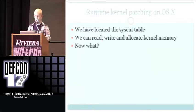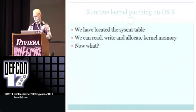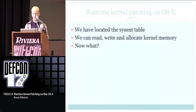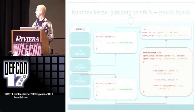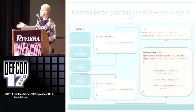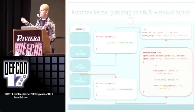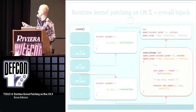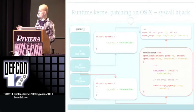Now we have located the sysentry table which holds all the system calls in the OS. We can read, write, and allocate kernel memory. So, here's the dirty business: the sysentry table contains all the system calls. Normally the open syscall points to its handler at a given address. What we do is modify that structure to point it to our address of choosing — where we have our hook function with a function pointer that calls the original and returns its value, allowing us to execute evil code in between, transparently.